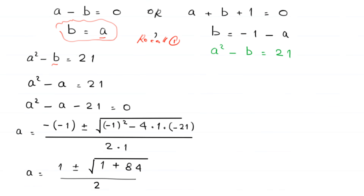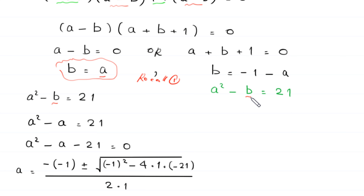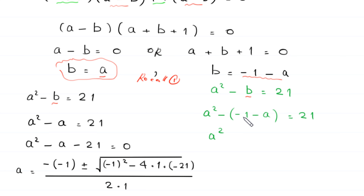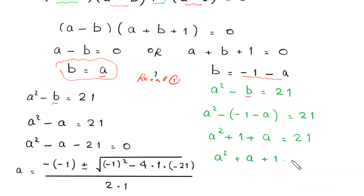Now we solve the second case. We replace b with negative 1 minus a in equation one. This becomes a squared minus (negative 1 minus a) equals 21, which gives a squared plus 1 plus a equals 21. Moving 21 to the left: a squared plus a plus 1 minus 21 equals zero, which simplifies to a squared plus a minus 20 equals zero.